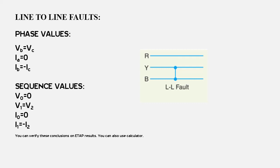Now, if we discuss line to line faults, take the same example with three phases: phase A, phase B, and phase C. If the fault is occurring on phase B and phase C, then the voltages on phase B and phase C will be equal, and the current flowing through the fault path will be equal in magnitude and opposite in phase. For example, if one angle +θ is flowing through phase B, then one angle −θ will be flowing through phase C.